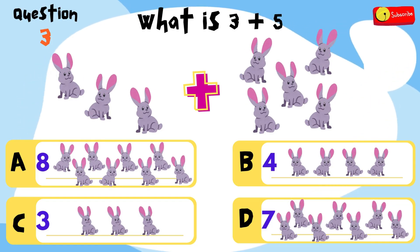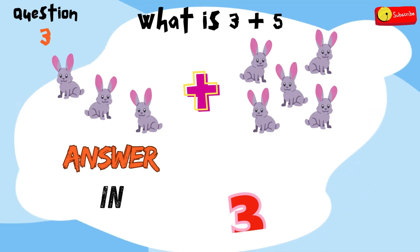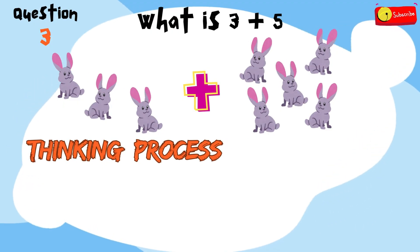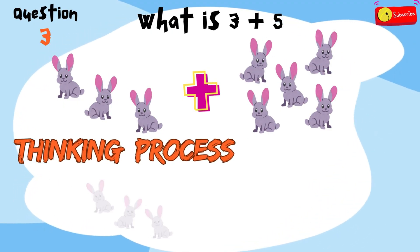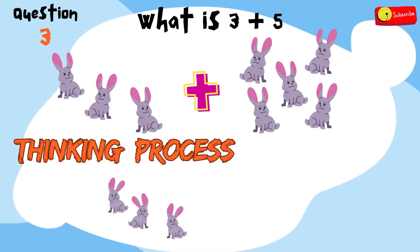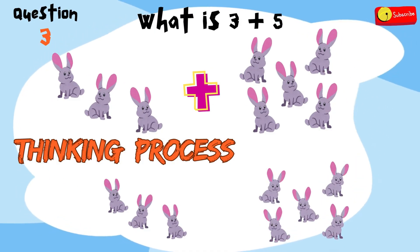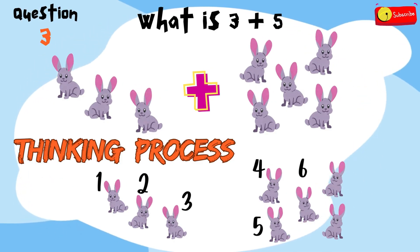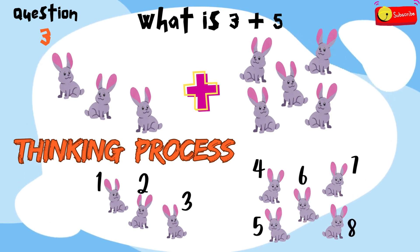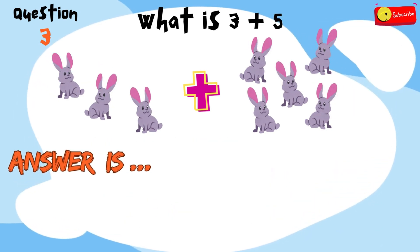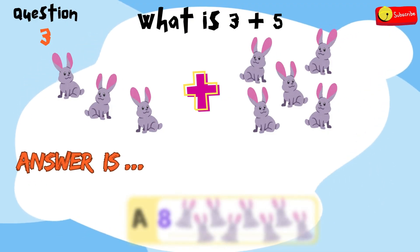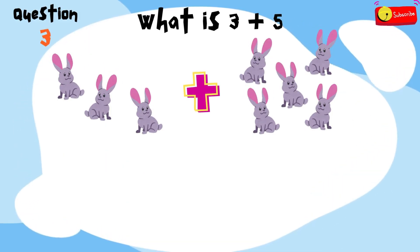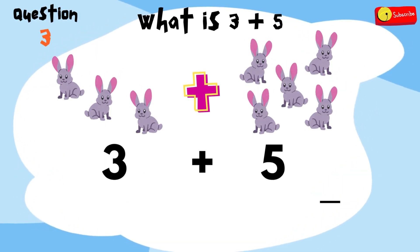All right, time's up! Here's the thinking process: if you have 3 rabbits and we add 5 more, in total we get 1, 2, 3, 4, 5, 6, 7, 8. So the answer is A — 8 rabbits. So, 3 plus 5 equals 8.